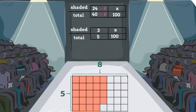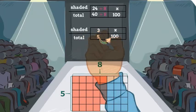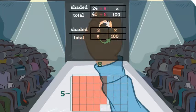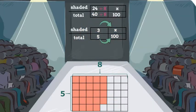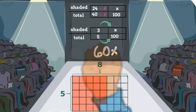Now we need to think. 5 times what gives me 100? That's right, it's 20. Next we need to multiply 3 times 20 and this will give us our percent. What did you get? That's right, it's 60 percent.